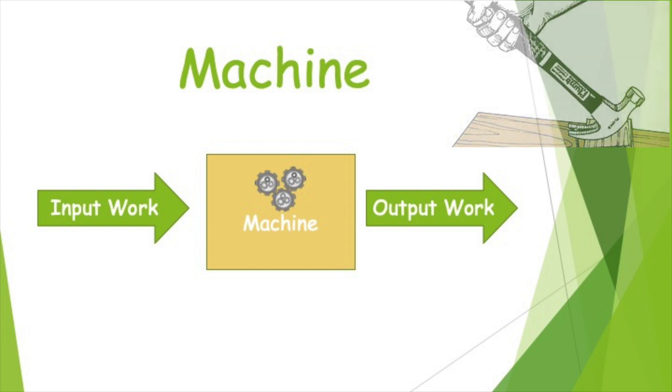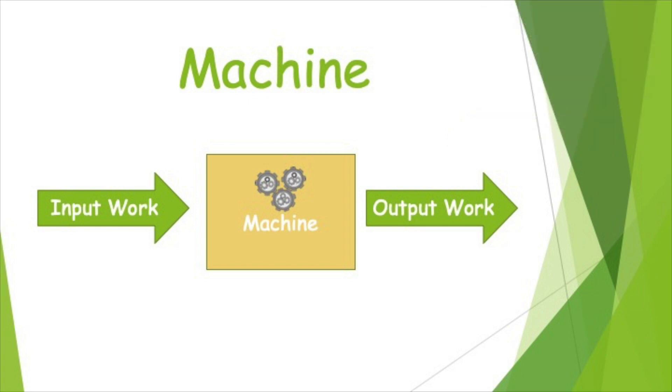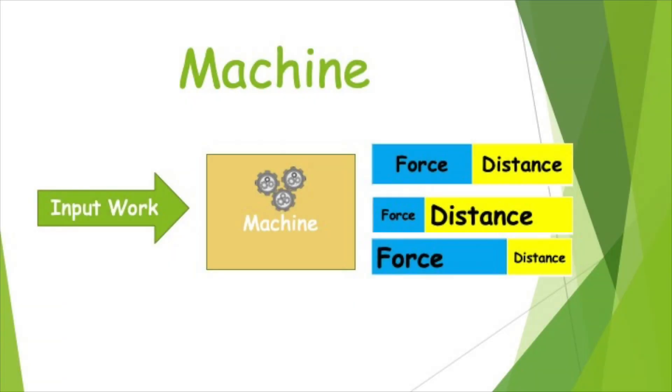So when you look at the input work and the output work, basically you can get one of three outcomes. Either the force and distance will stay the same, which might be a machine that just changes the direction for something like a single pulley, or the force can get decreased and the distance gets increased. Or the opposite can happen, the force can get increased, and the distance can get decreased. So what do these things look like?